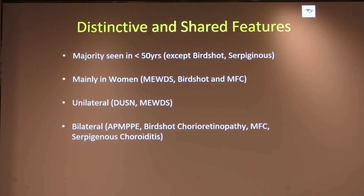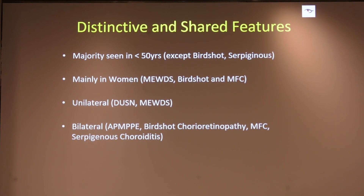Distinctive and shared features: the majority are seen under the age of 50, except bird shots and serpiginous. Most are seen in women — MEWDS, bird shots, and multifocal choroidopathies. Unilateral presentations could be DUSN or MEWDS; most others are bilateral. A caution: these features are not absolute — you can have incidences in patients over 50 or even under 18-20 years. So age is not a firm criterion, and gender can sometimes be misleading.